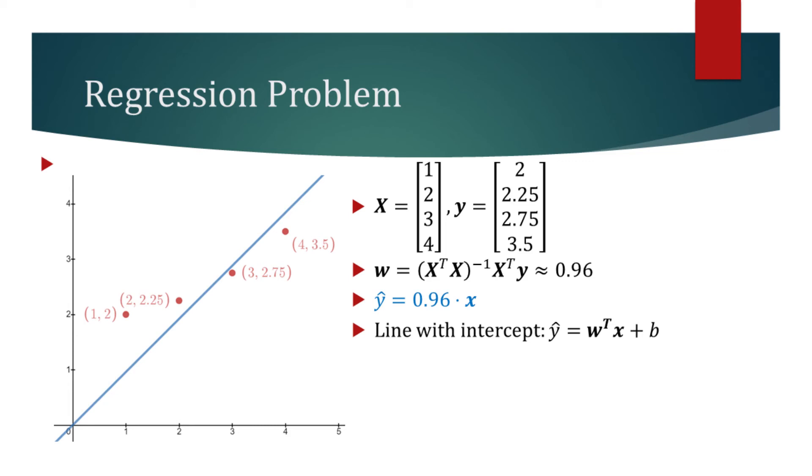However, we are not done yet. We can actually do better than this. Notice that the current line goes through the origin of the graph, but it would have performed better if it was not forced to. We can fix this by adding an intercept term b to the function of the line. Let's now find the line with an intercept term.